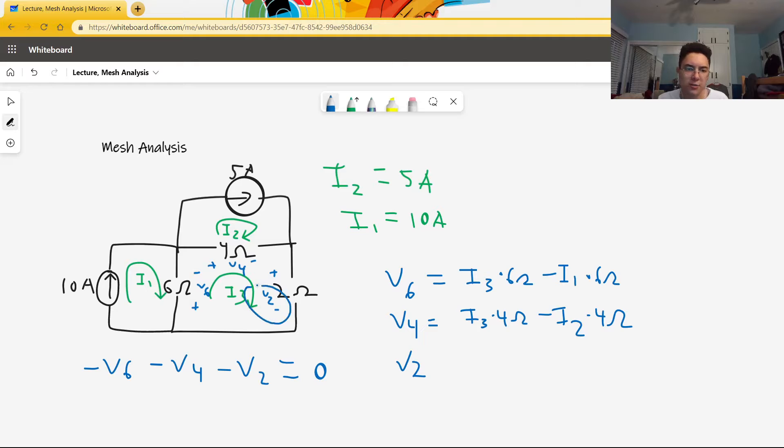Finally, V2 occurs solely due to I3. I3 goes from positive to negative, and so it produces a voltage drop in that direction. Remember that we've decided it's a voltage drop by convention. If we found out that I3 was going in the other direction, it would be causing a voltage rise in the direction that we chose for the terminals. It is just a convention to call this a voltage drop.